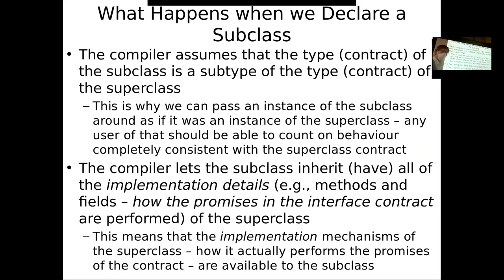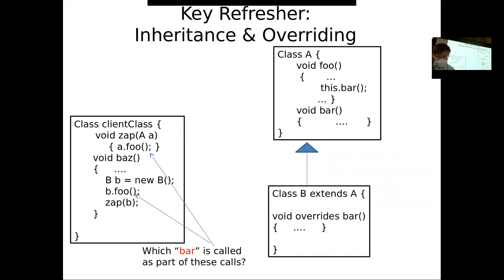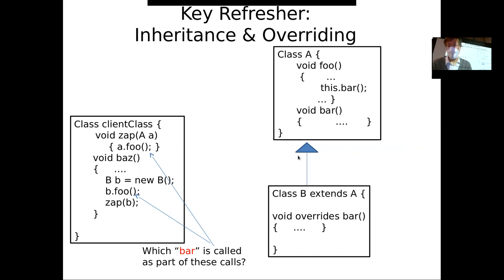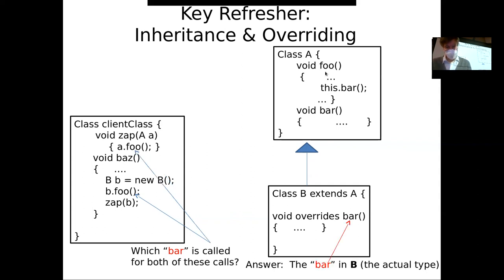There's another component to this: the subclass not only can be passed around as if it's an A, it inherits the implementation of A. It reuses the implementation details of A — like the methods and the fields and any data within A — which is also by default available in B. If A has a field called myDouble, then B has a field called myDouble that it inherits. If A has an array of ints, B has an array of ints inherited from A.